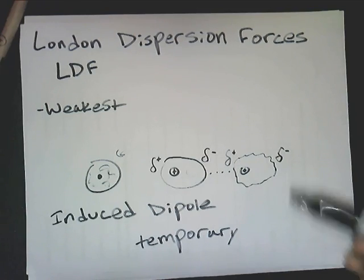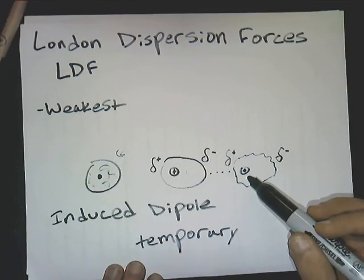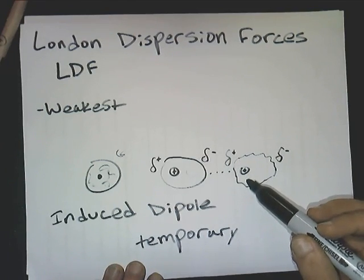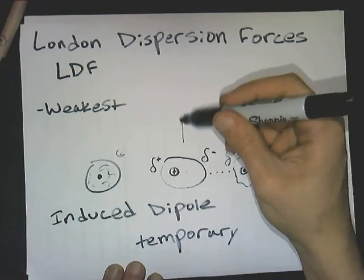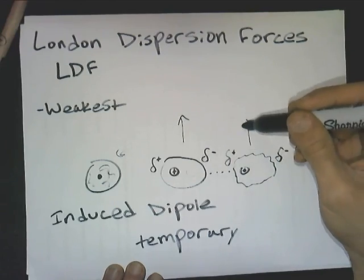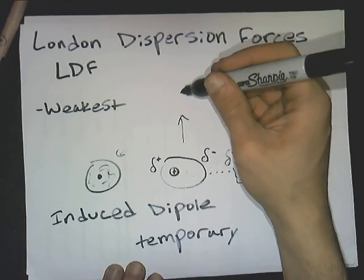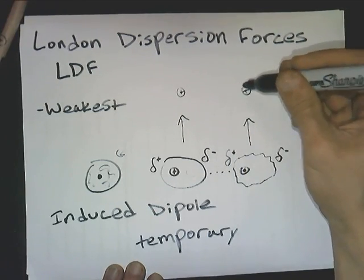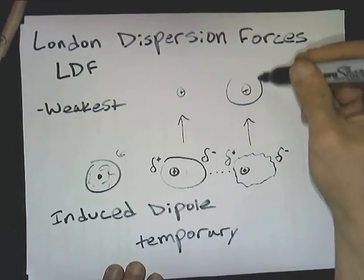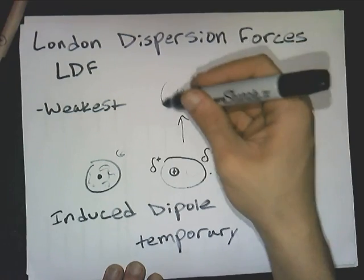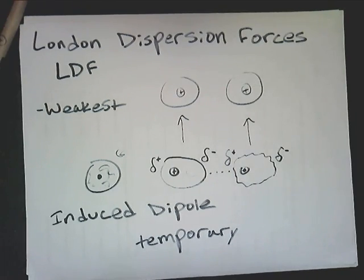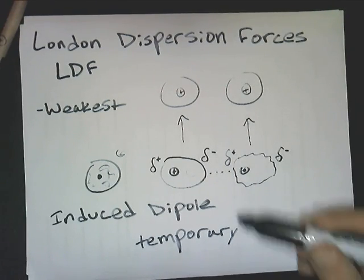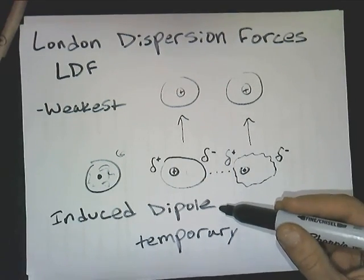The important thing to remember is that this is very, very temporary. Both of these molecules — or in this case, atoms — will revert back to their regular state shortly after this and not really have a dipole on them.